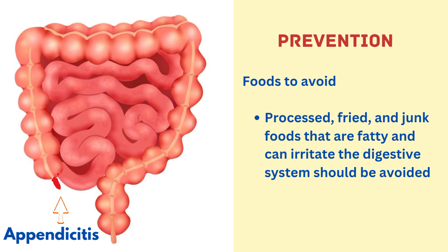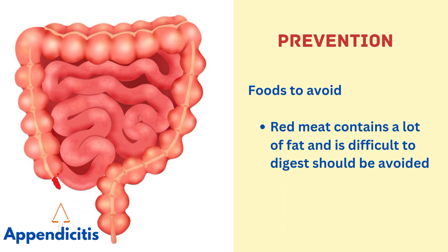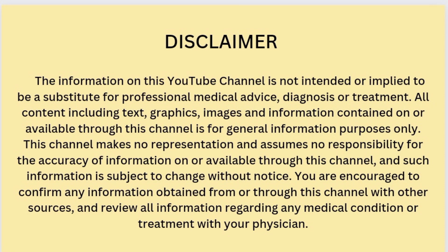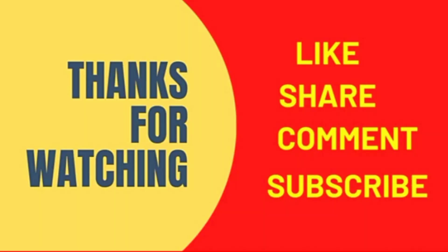Foods to avoid include processed, fried, and junk foods that are fatty and can irritate the digestive system. Alcohol should be avoided as it harms the liver and affects digestion. Red meat is difficult to digest and should be avoided, as should sugary items like cakes and pastries. Please like, share, and subscribe to Expert Medical Coding. Thanks for watching.